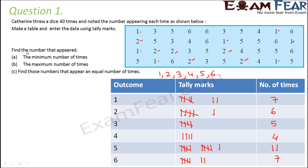Now we have to answer a few questions. Find the number that appeared minimum number of times. Which number got repeated minimum number of times? The minimum value is 4, and which number was repeated minimum number of times? It was 4.